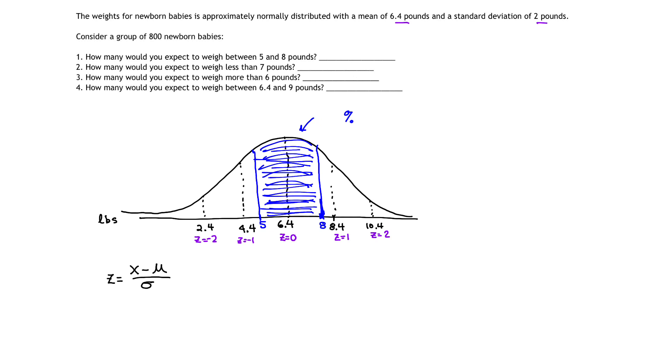So I want to calculate two z-scores. The first z-score is going to be the z-score that corresponds to 5 pounds. I'm going to use my formula, z equals X minus the mean over the standard deviation. So z, the first z-score, is equal to 5 as our X value, minus the mean, which is 6.4, divided by the standard deviation, which is 2.